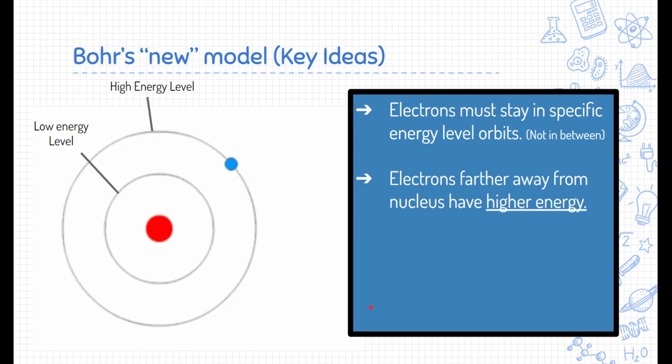He said that electrons farther away from the nucleus have higher energy. So, you can see here labeled the lowest energy is closest to the nucleus, and then the highest energy is away from the nucleus. The farther away you get, the higher the energy.